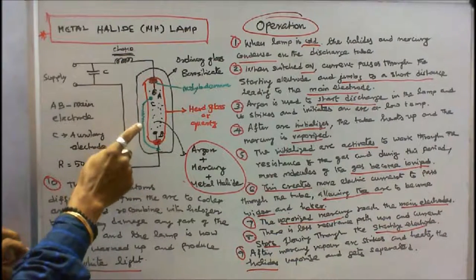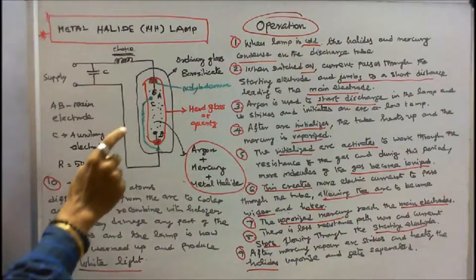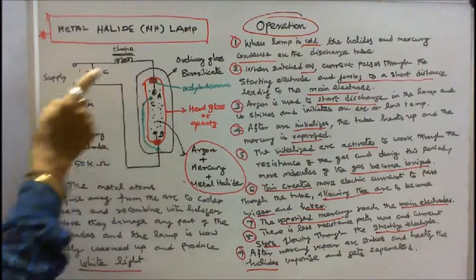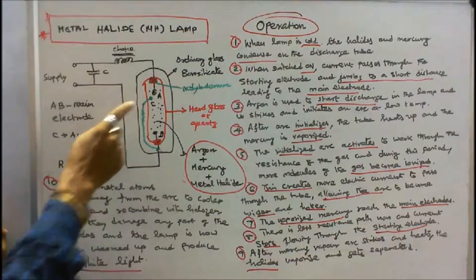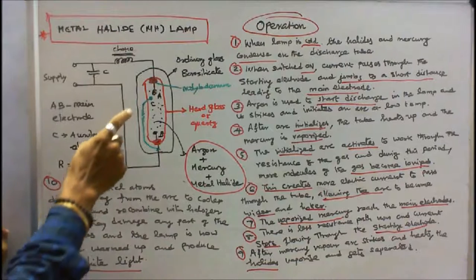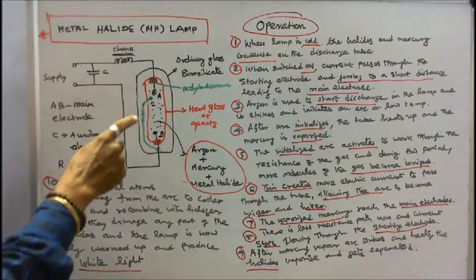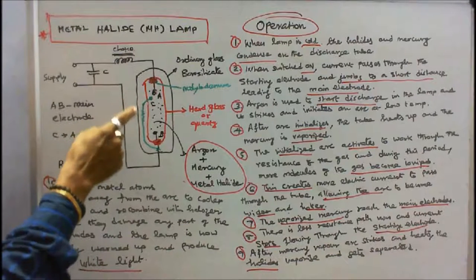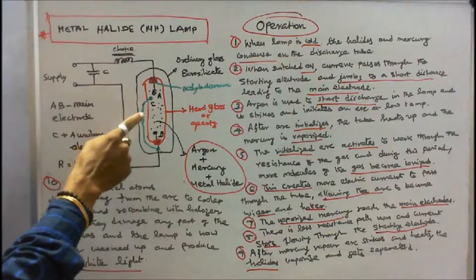The vaporized mercury reaches the main electrode where there is less resistance path, and current stops flowing through the starting electrode. After mercury vapor arc strikes and heats, the halides vaporize and get separated.